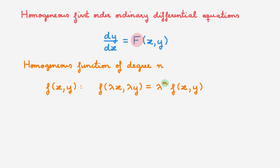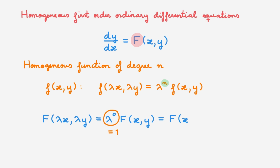To make things explicit, the function f must be such that f(λx, λy) is equal to lambda to the power 0 times f(x,y). As lambda to the power of 0 is simply 1, we can rewrite this as simply f(x,y). In the rest of this video, we will explore how to solve differential equations of this form.